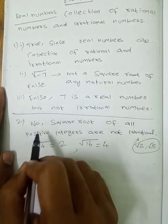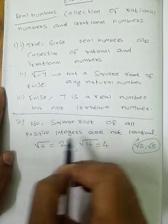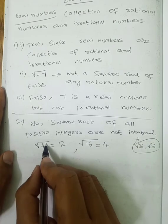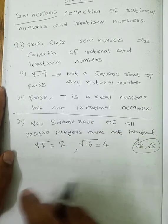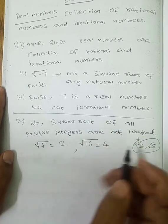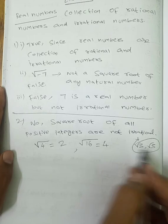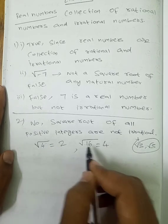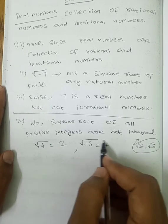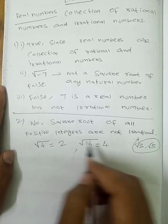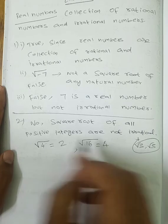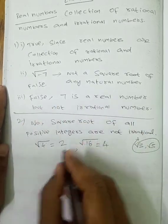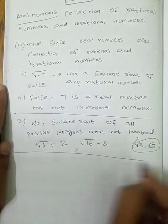Some square roots of positive integers are irrational — for example √3 and √5. But if you have a perfect square like √4 = 2, that is rational, not irrational. So the answer is No — not all square roots of positive integers are irrational.